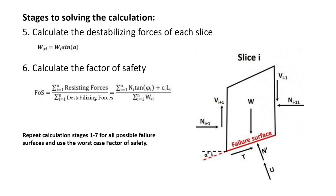The destabilizing forces on each slice are calculated using the weight of each slice and the angle of the slice base from horizontal. The factor of safety of the slope is the ratio between the sum of the resisting and sum of the destabilizing forces acting on all slices.